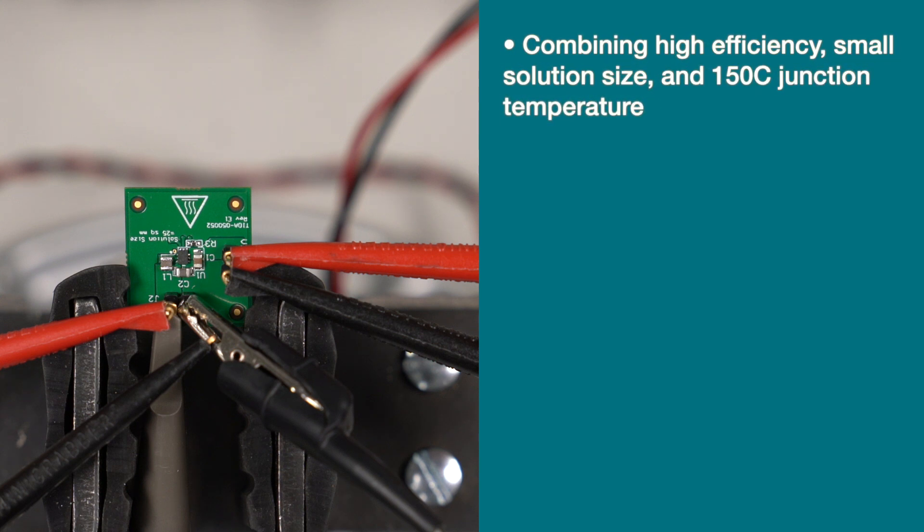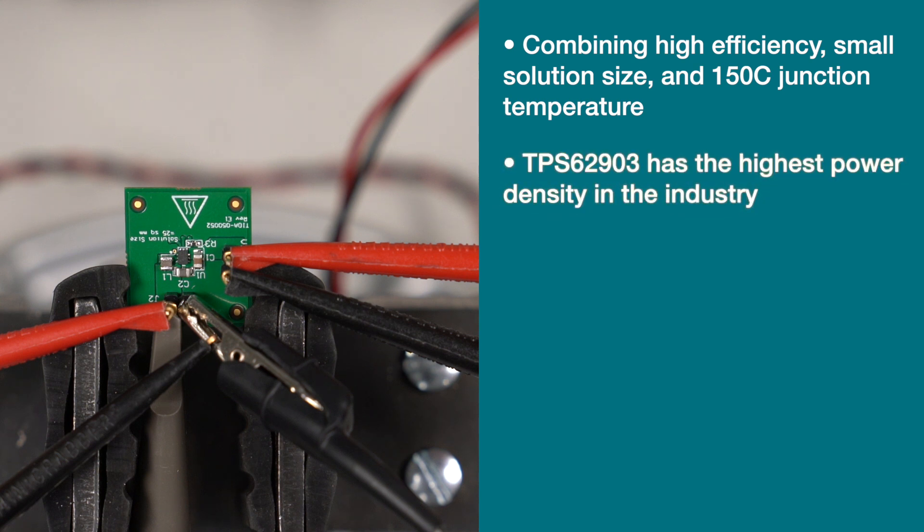Combining the high efficiency, small solution size, and 150°C junction temperature, the TPS62903 can provide the highest buck converter power density in the industry for nominal 12V input and 3 amp output.